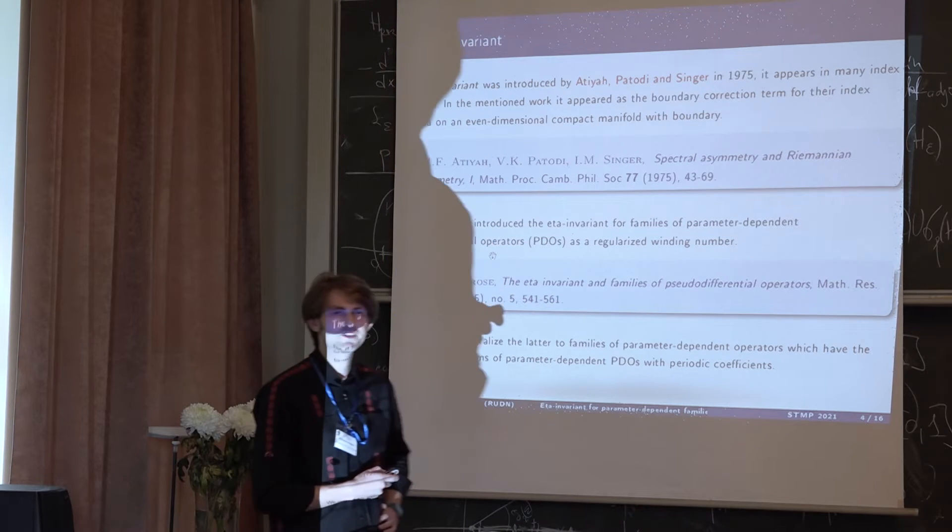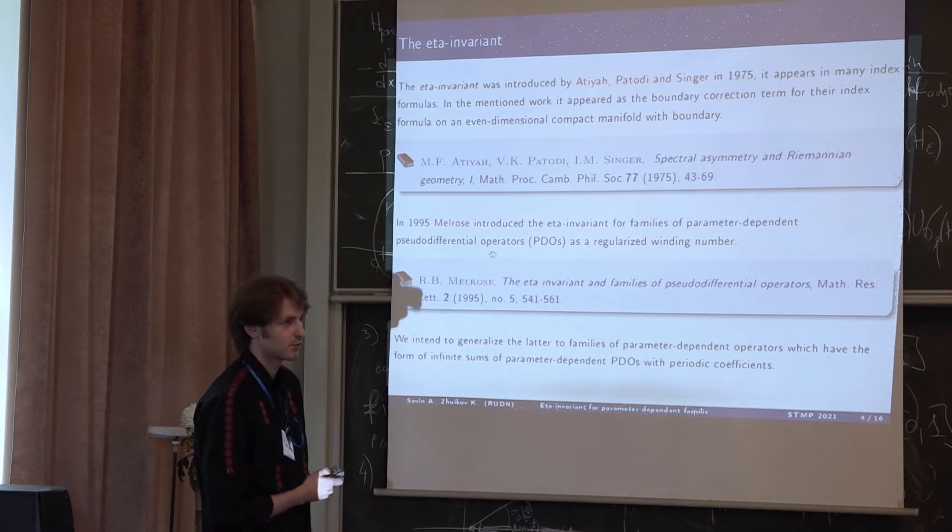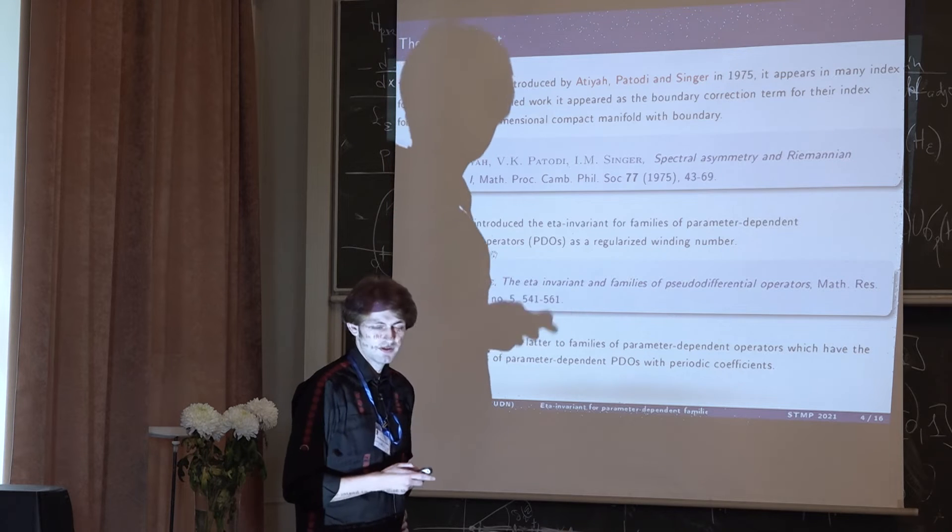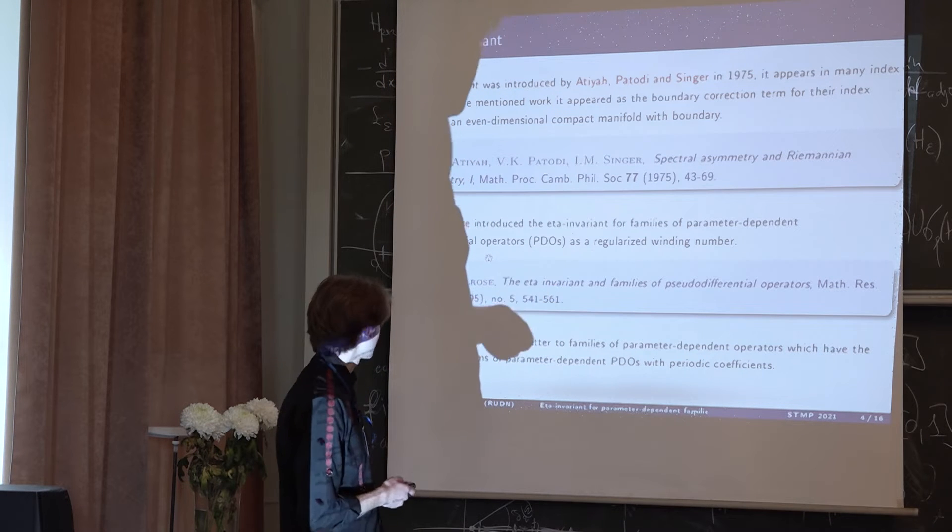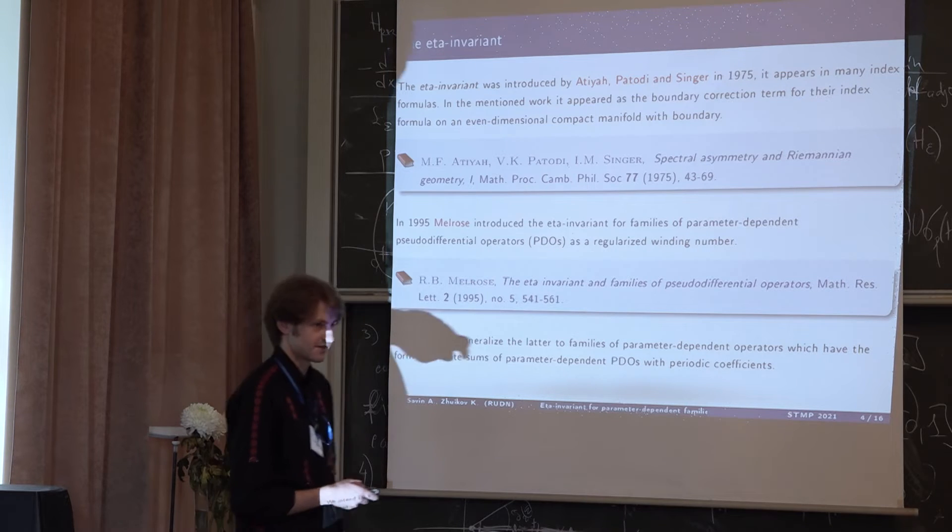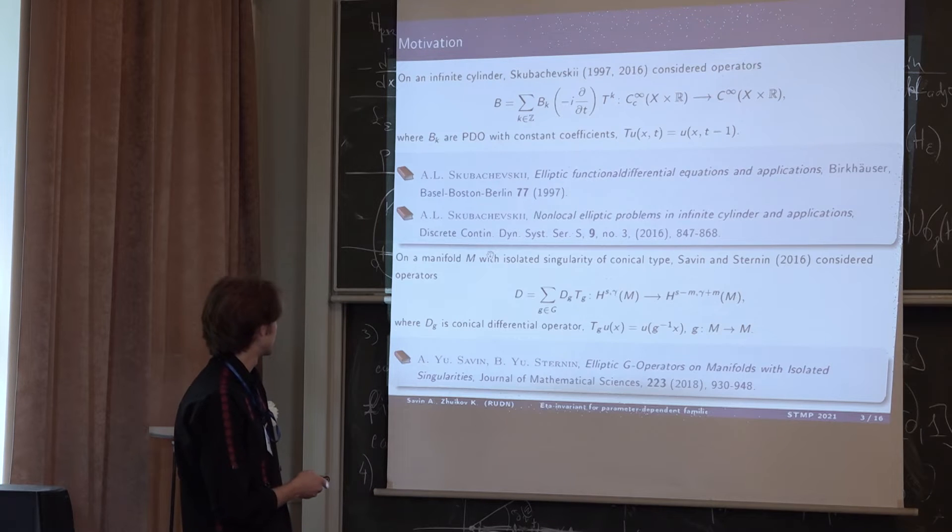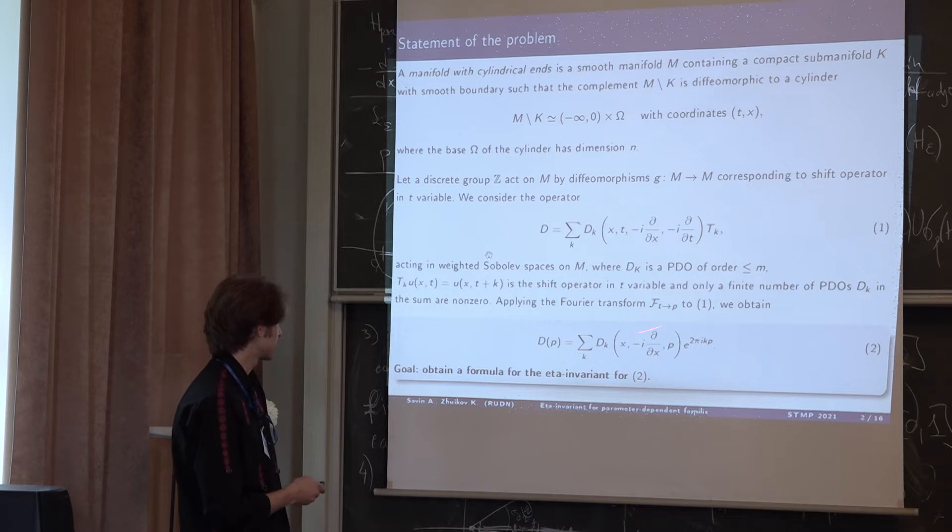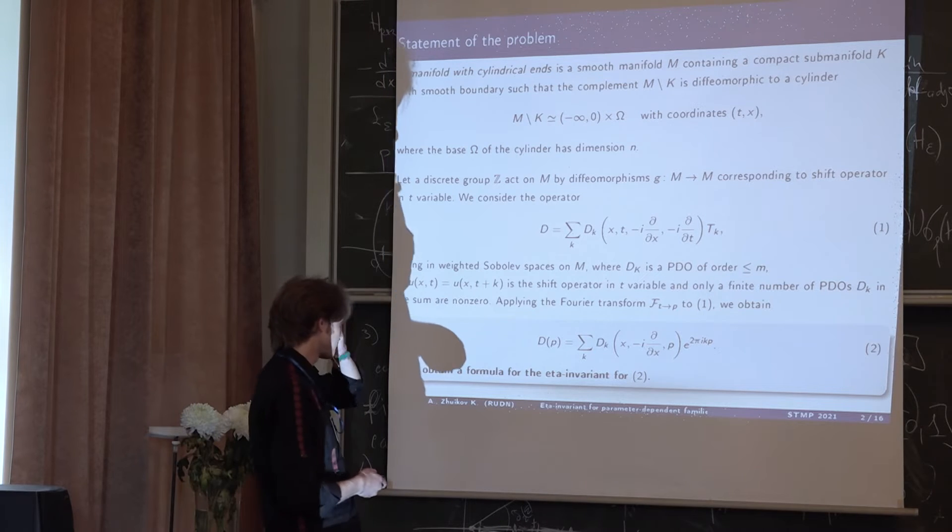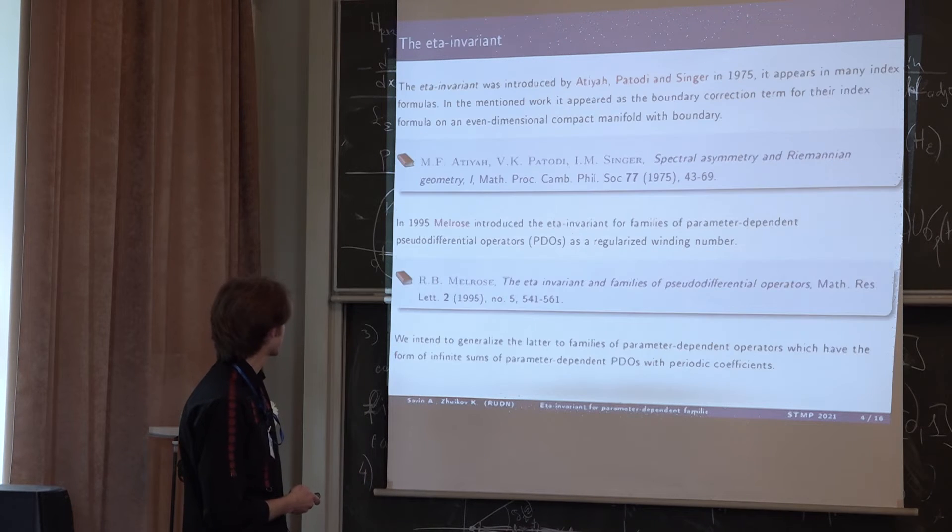In 1995, Melrose used a different approach. He took another invariant called winding number and wanted to generalize it. I will tell you about that invariant on the next slide. He used parameter dependent PDOs, pseudo differential operators. We intend to generalize Melrose's result to the case of our operators. Let me remind you, he had just PDO with a parameter, but we have a sum, such sums, where each D_k is a PDO parameter dependent PDO. The sum can be finite or infinite. It doesn't really matter.